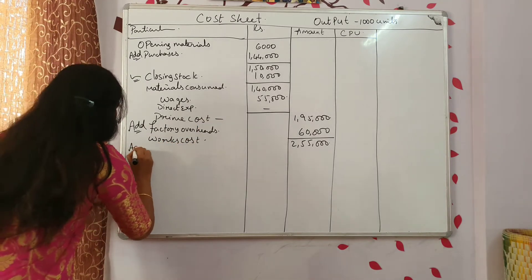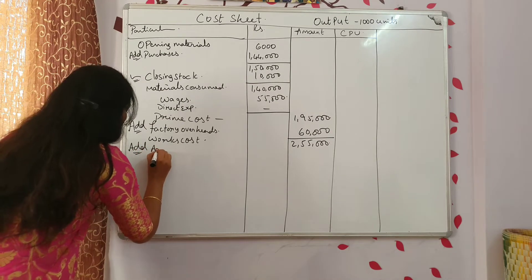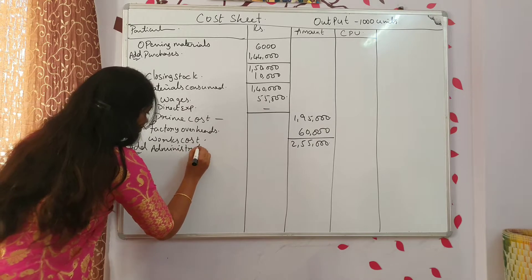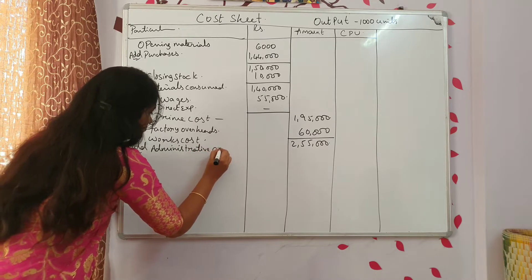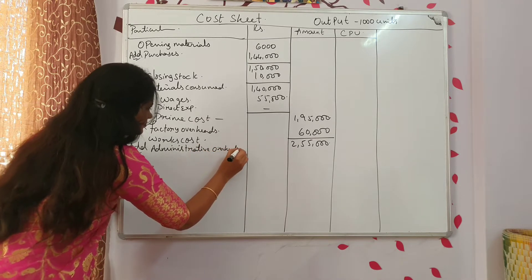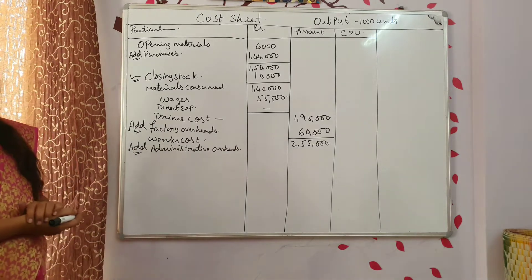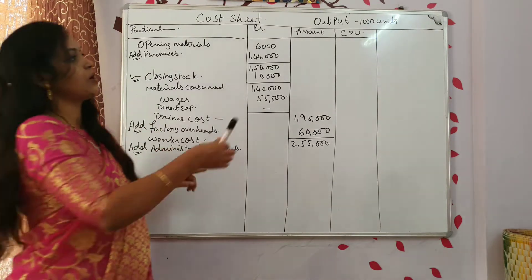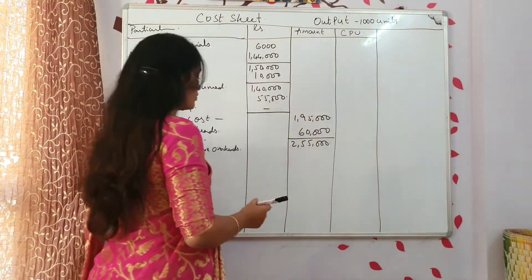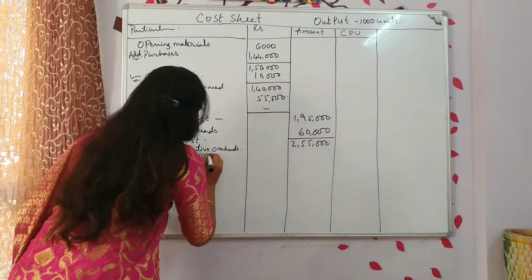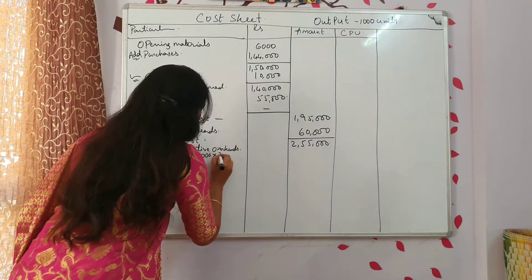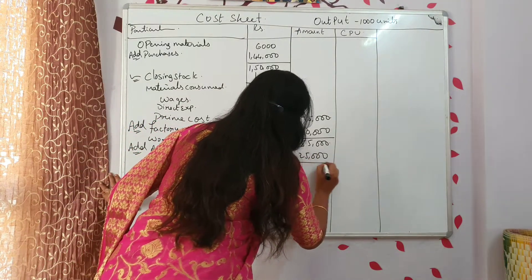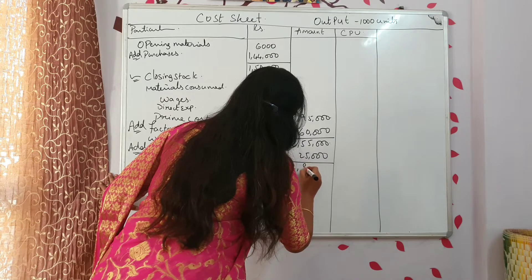To this add administrative overheads. Administrative and selling overheads per unit: 25 rupees each. So for each unit they spent 25 rupees. Total how many units? 1000 units. So you have to take 1000 into 25 — total 25,000 rupees. So how much will you get? 2,80,000.